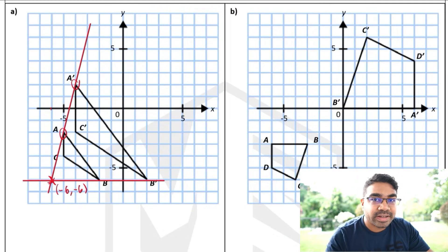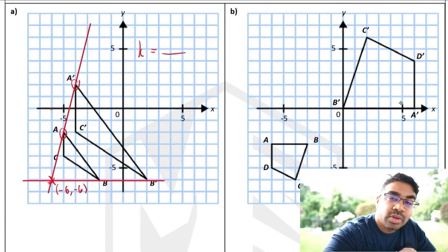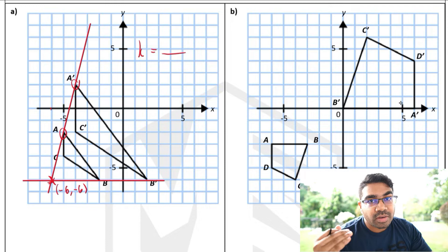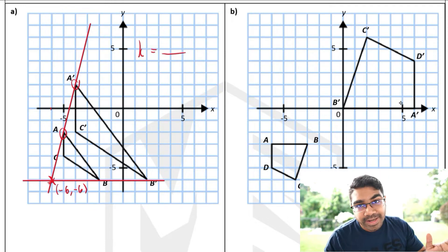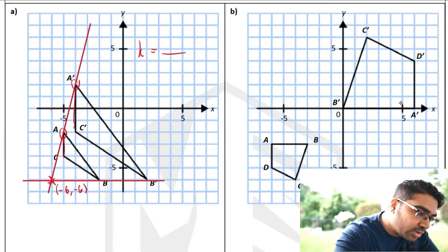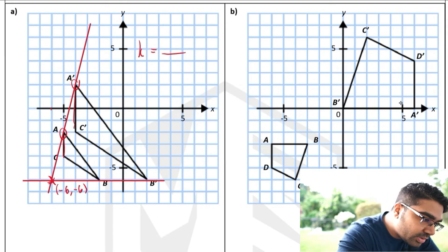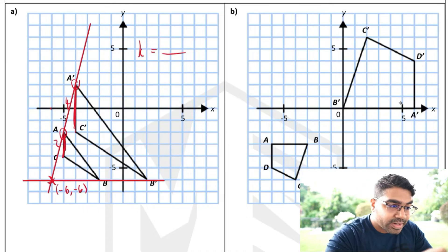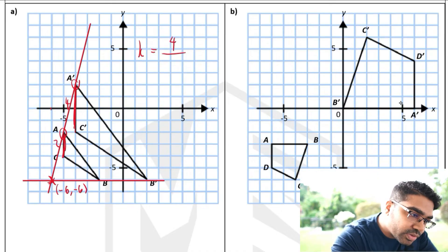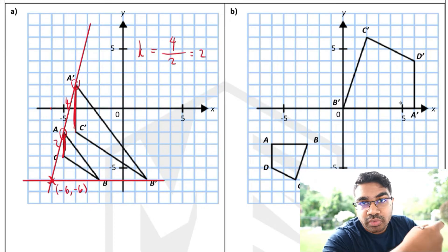Now we need to find the scale factor. The scale factor formula is the image length over the corresponding object length. It's always easier to choose a horizontal or vertical side because we can count the number of squares. For the image AC there are four squares, and for the object there are two squares. So the scale factor is 4 over 2, which equals 2.